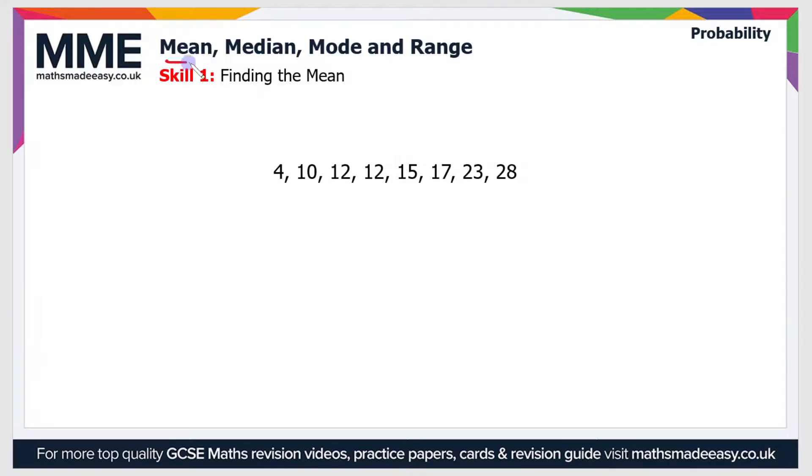First of all, the mean, the median and the mode are all different types of average and the range is a measure of spread of the data. Now the first skill that we'll look at is finding the mean.